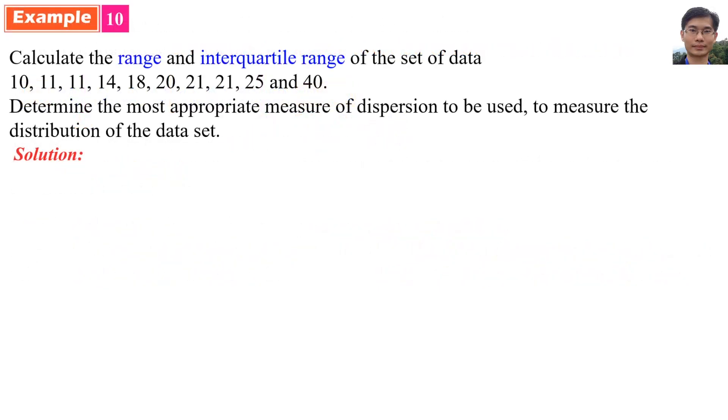Example 10. Calculate the range and interquartile range of the set of data 10, 11, 11, 14, 18, 20, 21, 21, 25 and 40. Determine the most appropriate measure of dispersion to be used to measure the distribution of the data set. Solution: First, make sure the data must be sorted from small to big. So, the range is equal to the maximum value 40 minus the minimum value 10. So, the range is equal to 30.